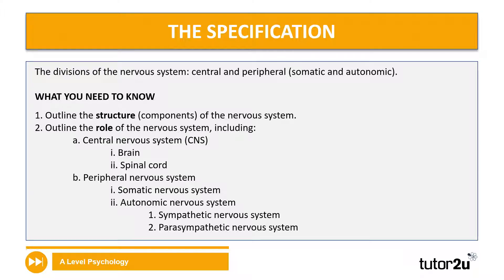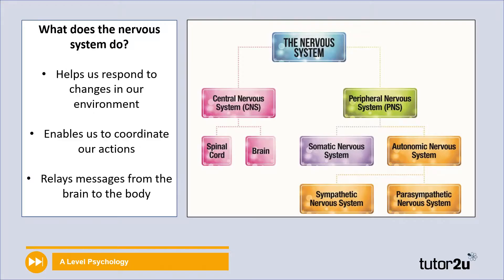We need to know the two different nervous systems — the central and peripheral — and there are different sections within those as well. You've got to be able to outline the structure, meaning all the different subdivisions and components of the nervous system. You should also be able to outline the role of the nervous system — its purpose, functions, and what it does. That includes the central nervous system consisting of the brain and spinal cord, the peripheral nervous system consisting of somatic and autonomic nervous systems, and the autonomic nervous system includes the sympathetic and parasympathetic nervous systems. So quite a lot to cover and quite a lot of new terminology.